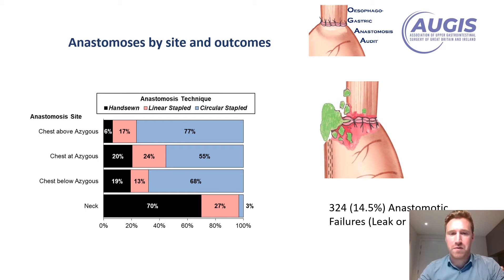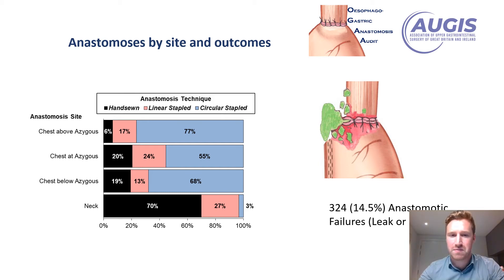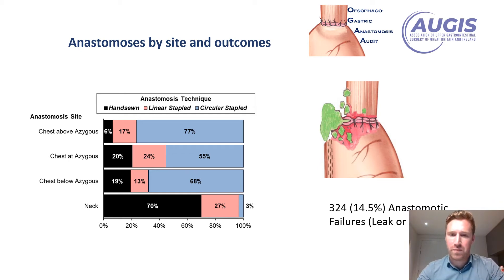In terms of anastomosis by site, approximately 70% of patients had a circular stapled anastomosis in the chest, with about 20% having a linear stapled semi-mechanical and about 10% having a hand sewn anastomosis in the chest. In the neck the opposite was true, with about 70% receiving a hand sewn anastomosis, about a quarter receiving a linear stapled anastomosis, and a small number receiving a circular stapled anastomosis. Overall, 324 patients — 14.5% of the total cohort — had either an anastomotic leak or conduit necrosis.